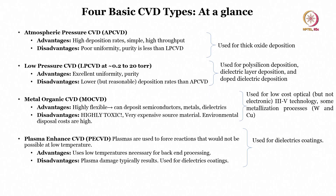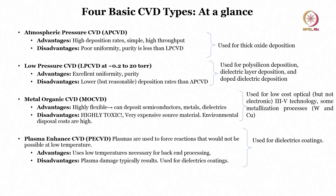In CVD there are four basic types. Atmospheric pressure CVD (APCVD): high deposition rates, simple, high throughput, but poor uniformity and purity less than LPCVD. Low pressure CVD (LPCVD): excellent uniformity and purity, but lower deposition rates than APCVD. MOCVD (metal organic chemical vapor deposition): highly flexible, can deposit semiconductors, metals, and dielectrics, but the source material is highly toxic, very expensive, and environmental deposition costs are high.